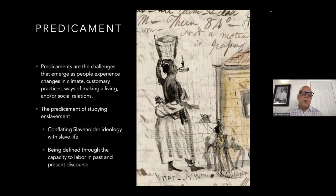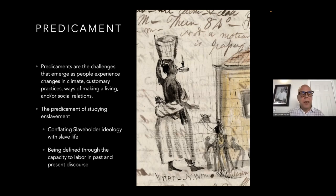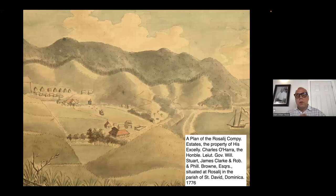Predicament is also useful because it forces us to ask very serious methodological questions, especially when dealing with the 18th-century Caribbean world—to constantly push ourselves beyond defining enslaved peoples just through their capacity to labor, and how that can get reproduced in present-day discourses. We also have to be very careful in examining the documentary record not to conflate slaveholder ideology with slave life itself.